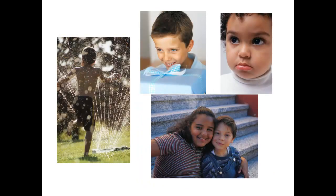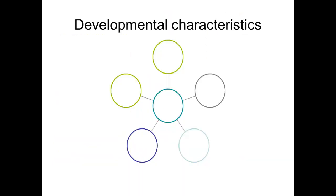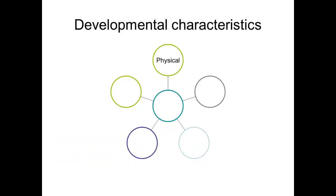There are five different developmental characteristics that we need to consider. The first is knowing the child physically — how does their body grow and develop, and how does one area of development affect the other?